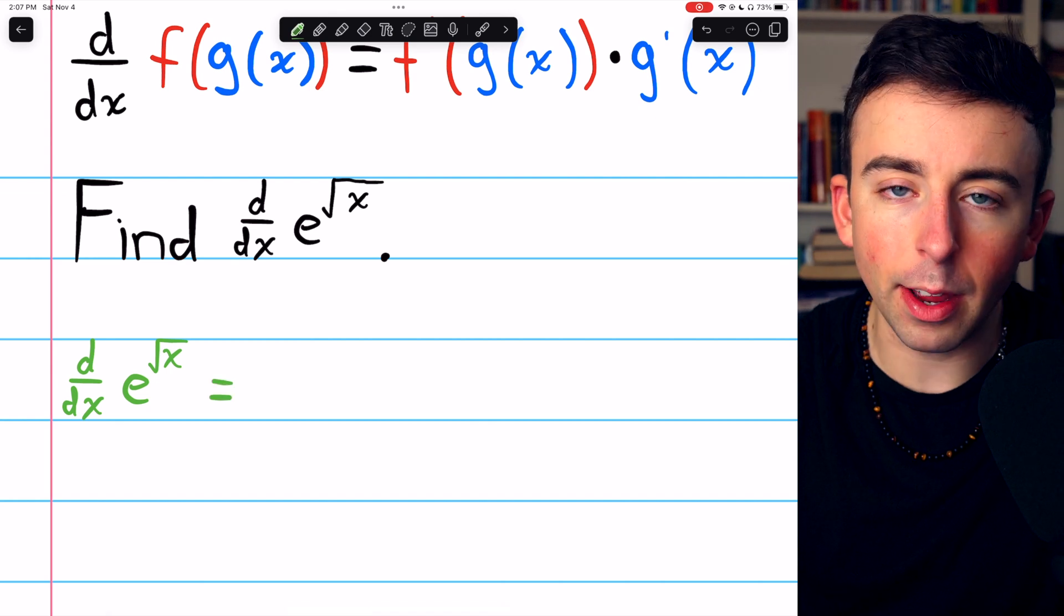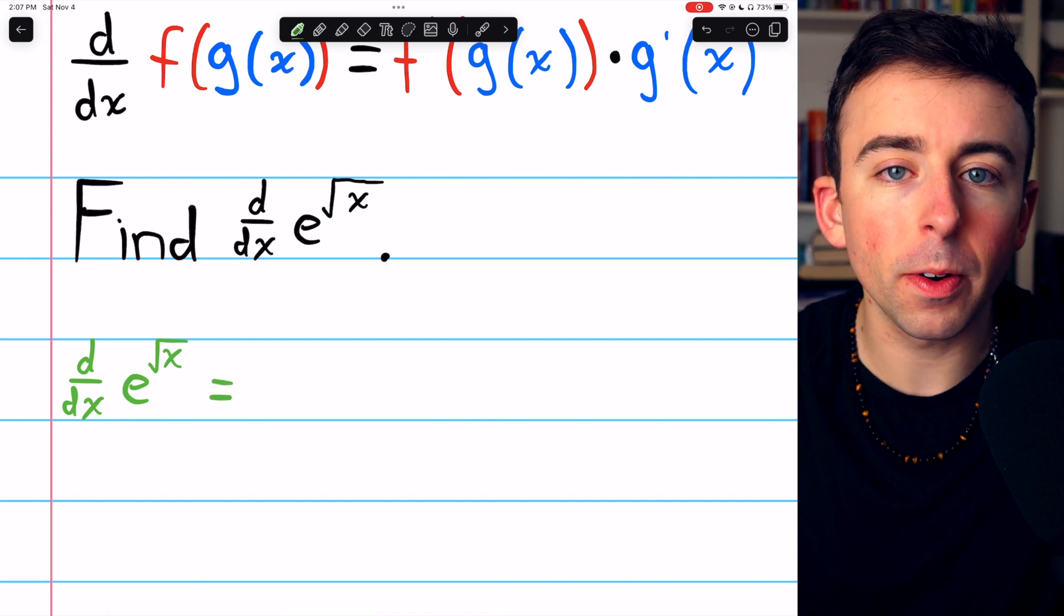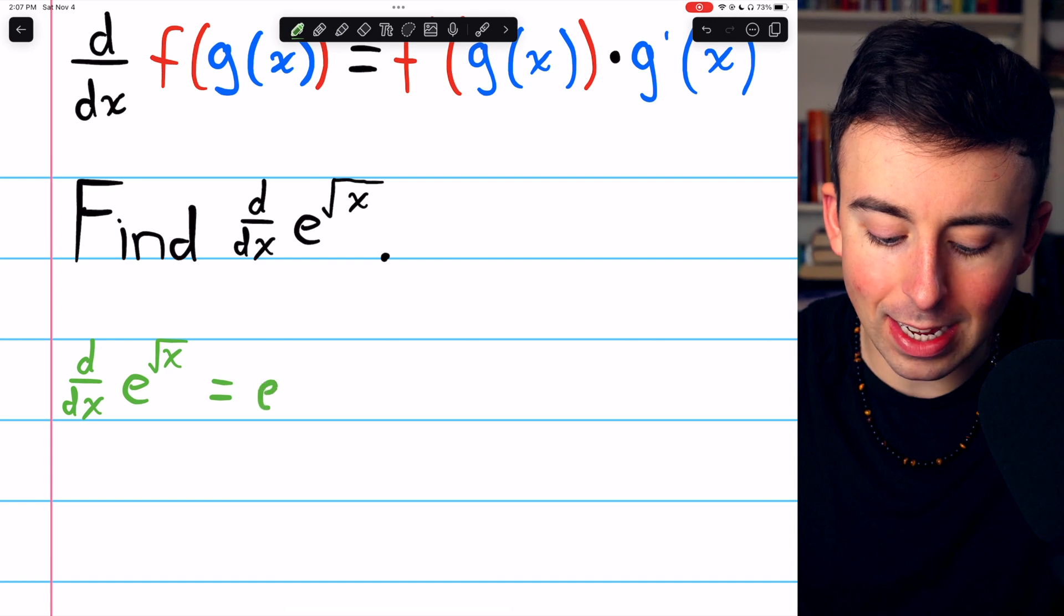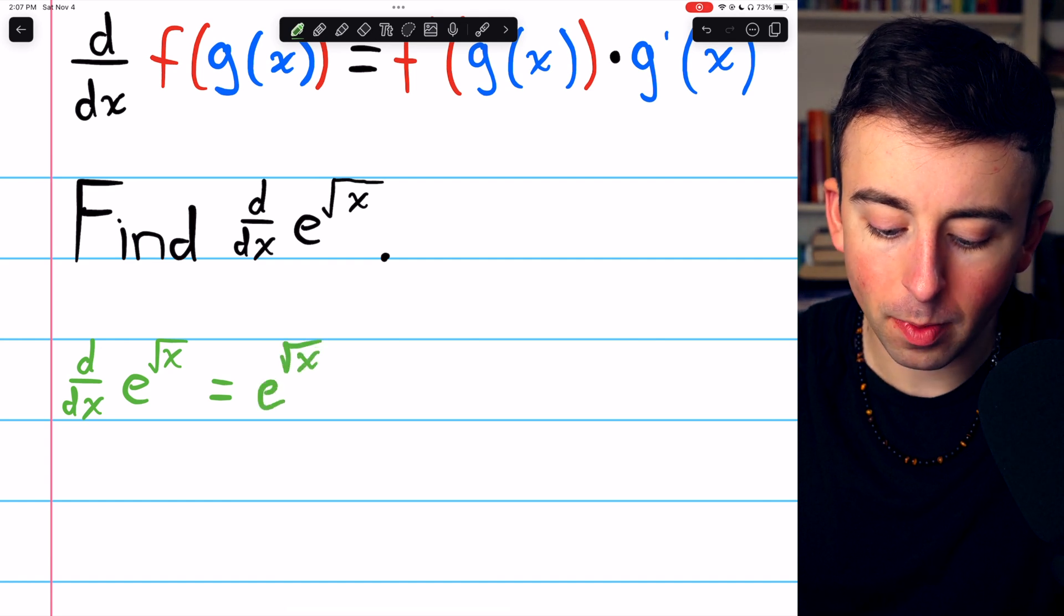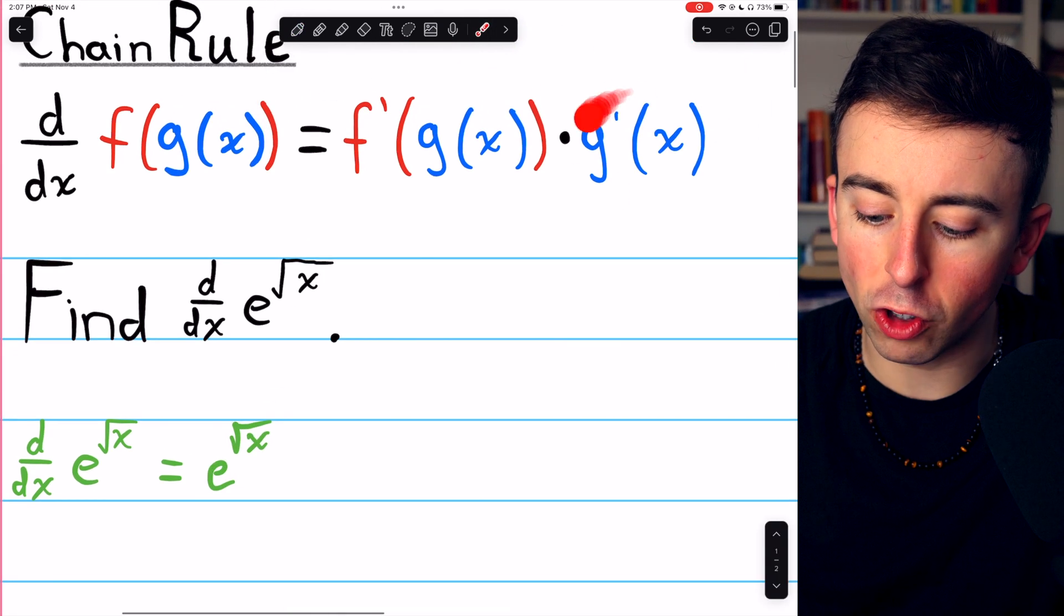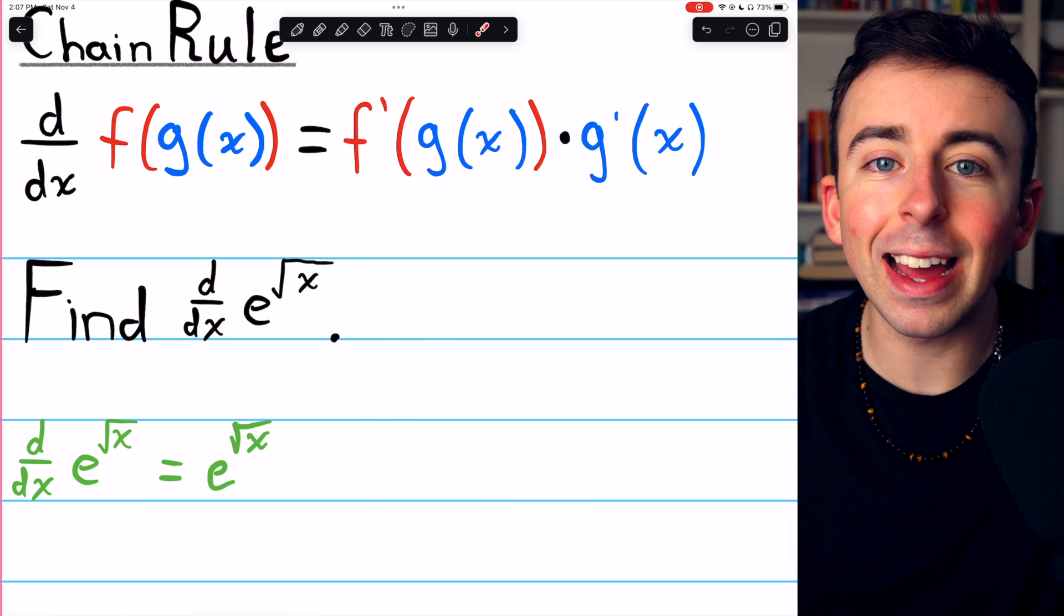Again, the outside function is e to a power, and the derivative of e to a power is e to that power. Then we just need to multiply by g prime, the derivative of that inside function.